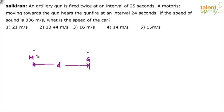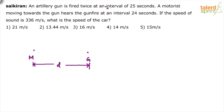Now assume in Case 1 — what happens? An artillery gun is fired twice at an interval of 25 seconds. Let us assume that the motorist is not moving. The car is not moving. What happens? The gun is fired twice at an interval of 25 seconds.